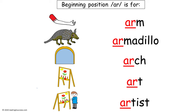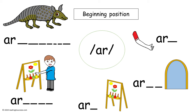Arm, armadillo, arch, art, artist. This is a template for the first activity, practicing the beginning position of the A-R R-Controlled Vowel that makes the R sound. This template is used in the demonstration lesson.